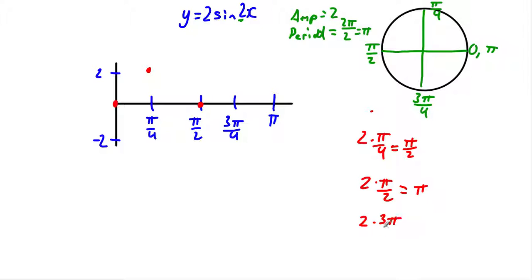Next up, I have 2 times 3 pi over 4. This is going to give me 3 pi over 2. So 2 times 3 pi over 4 is 3 pi over 2. Sin of 3 pi over 2 is negative 1 times 2 gives me negative 2. And, of course, sin of 2 pi is 0.